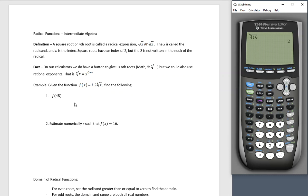Let's just play around with this a little bit. Given the function f of x equals 3.2 times the sixth root of x, find the following. I'm going to do 3.2, and I'm going to do this in two different ways. That x should be replaced by a 45.